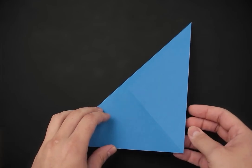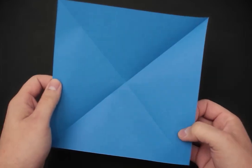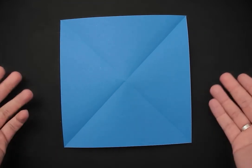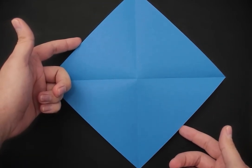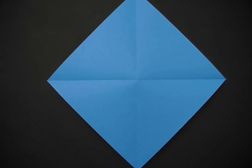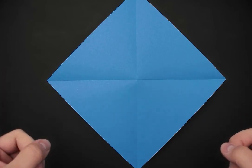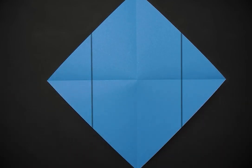We can unfold this one too. Now just to make it easier, let's rotate the paper in this position. We'll need to bring the two side corners to the middle by folding these two lines.